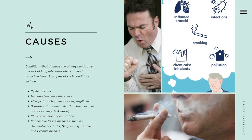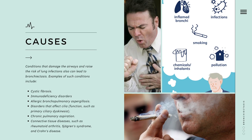Conditions that damage the airway and raise the risk of lung infections can also lead to bronchiectasis. Examples include cystic fibrosis, a genetic condition that affects a protein in the body — people who have cystic fibrosis have a faulty protein that affects the body's cells, tissues, and the glands that make mucus and sweat. Also, immunodeficiency disorders such as common variable immunodeficiency and, less often, HIV and AIDS. And allergic bronchopulmonary aspergillosis, which is an allergic reaction to a fungus called aspergillus that causes swelling in the airways.